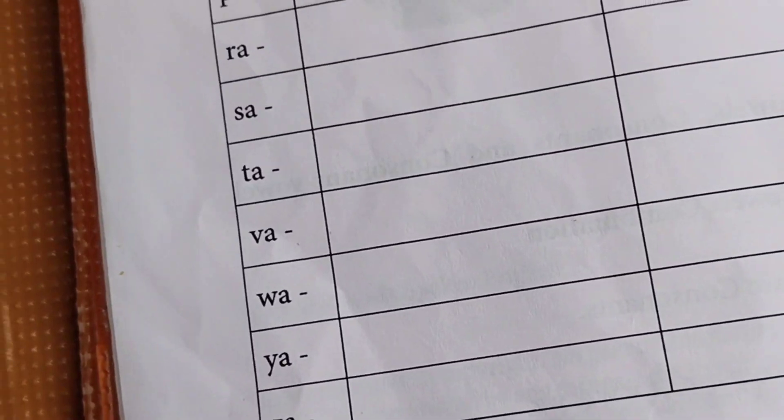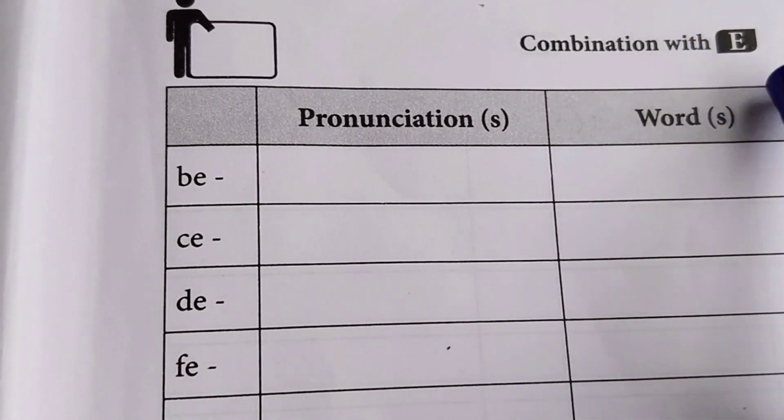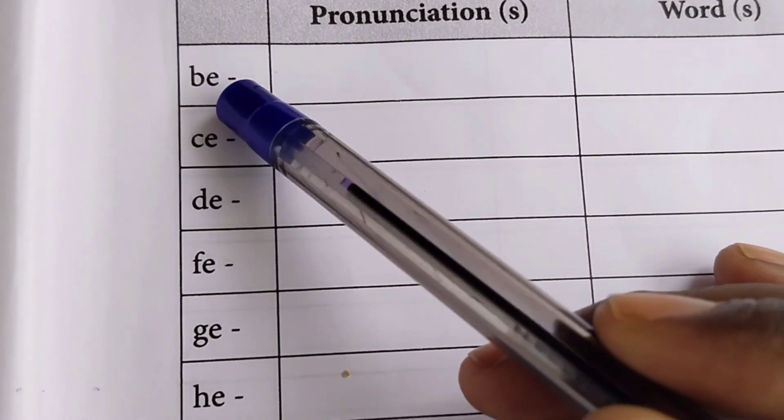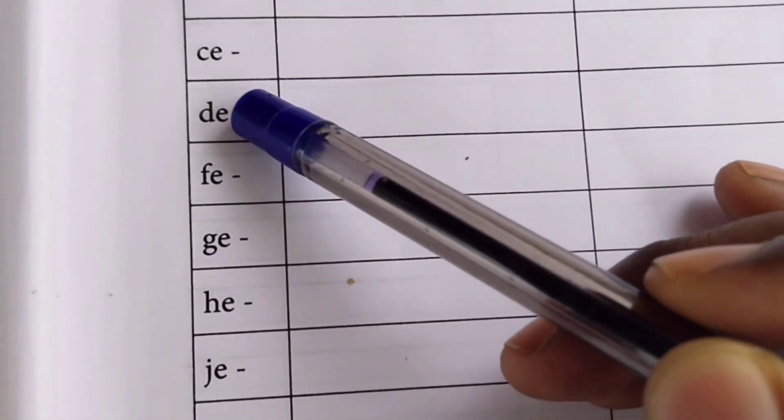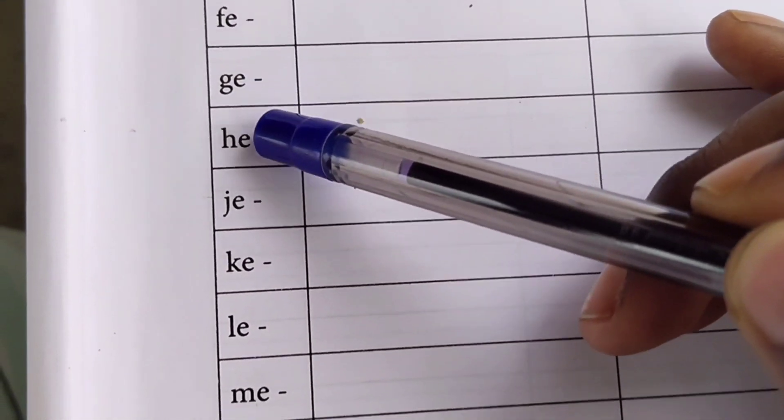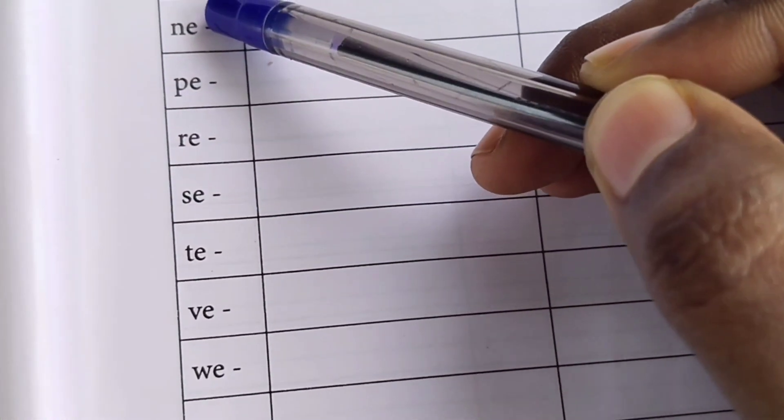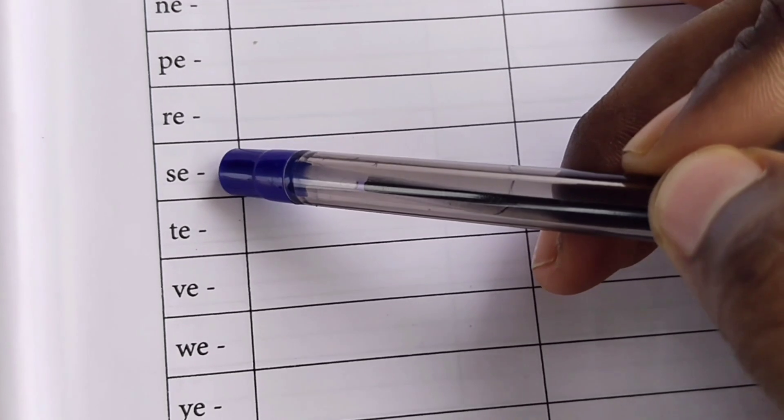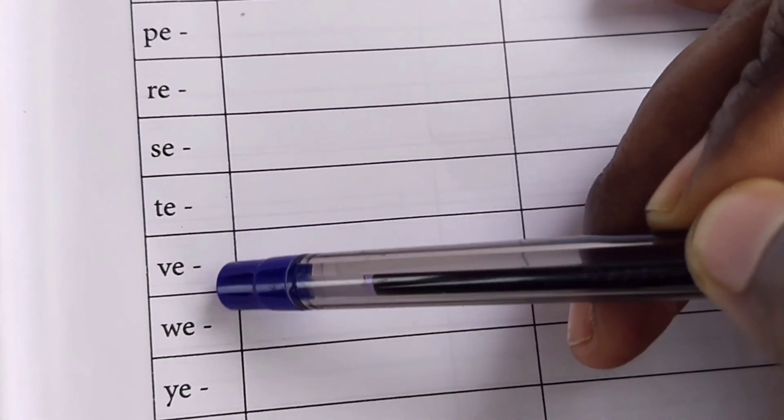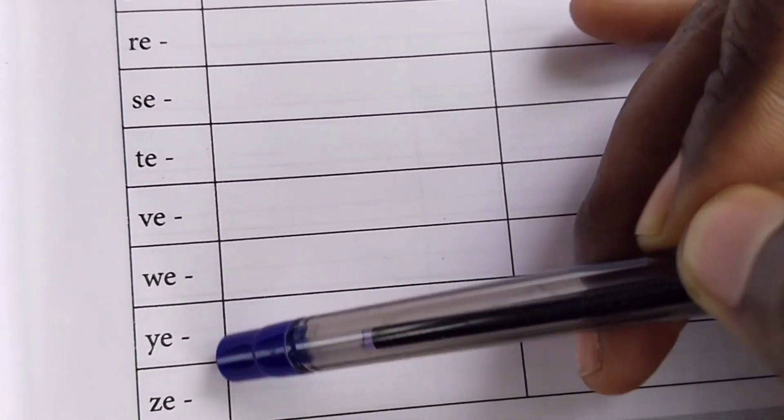Now, combination with E: BE, CE, DE, FE, GE, HE, JE, KE, LE, ME, NE, PE, RE, SE, TE, VE, WE, YE, ZE.